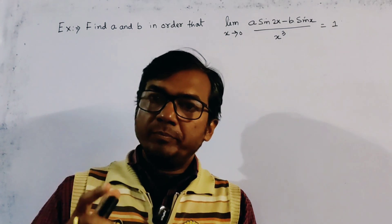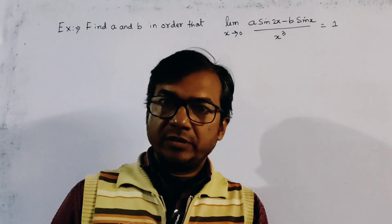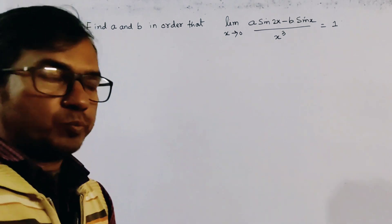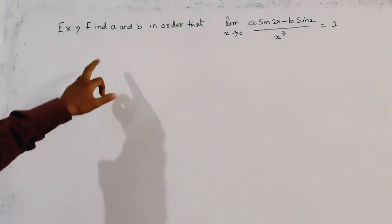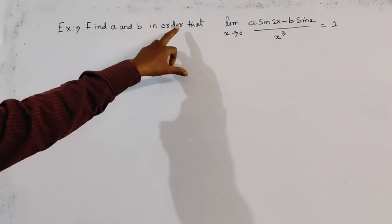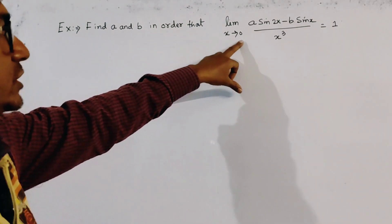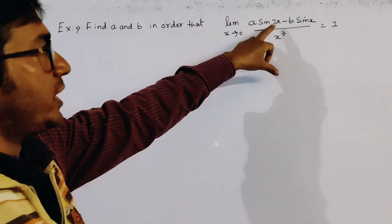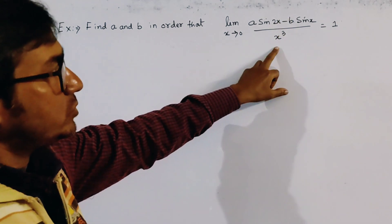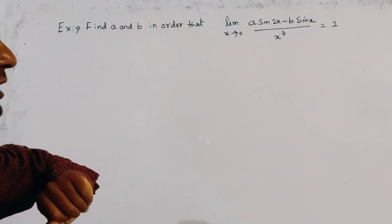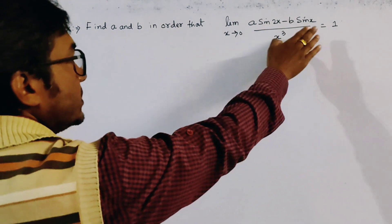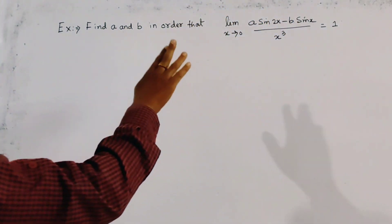Today's problem is from limits, specifically using L'Hôpital's rule. The problem is: find A and B such that the limit as x tends to 0 of (A sin 2x minus B sin x) divided by x cubed equals 1. The limiting value is given and we have to find the values of A and B.